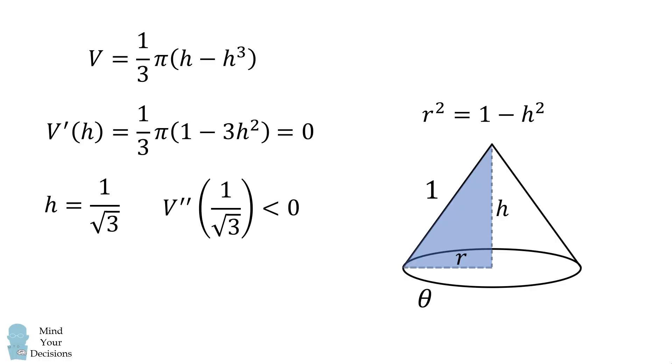Just for fun, we can double check that this is a local maxima. We then substitute the value for h into the volume formula, and we get the maximum volume is equal to 2 pi divided by 9 times the square root of 3.